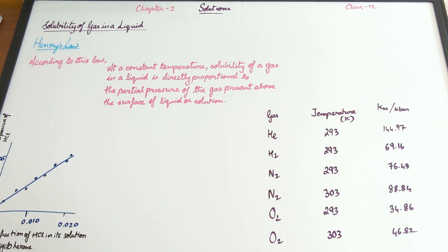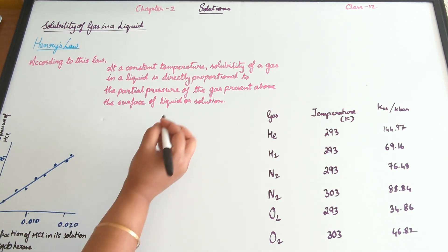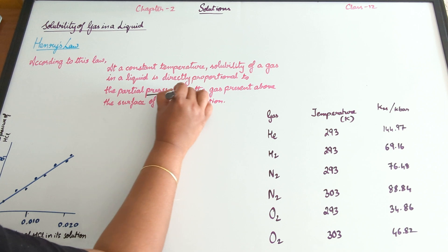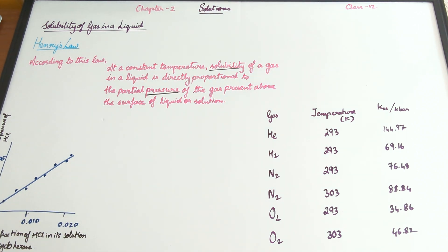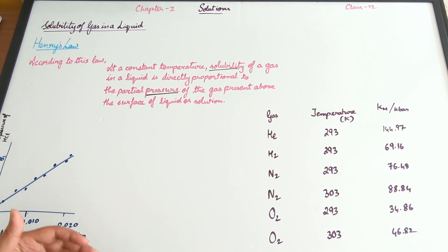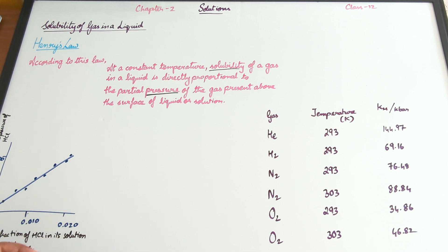William Henry studied the solubility of a gas in a liquid and gave a quantitative relationship between pressure and solubility. According to this law, at a constant temperature, the solubility of a gas in a liquid is directly proportional to the partial pressure of the gas present above the surface of the liquid or solution.